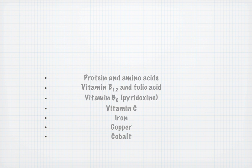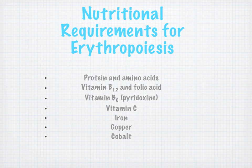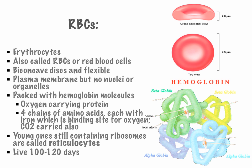On this slide, we see the necessary nutritional requirements for erythropoiesis — vitamins and other elements essential to make blood. Red blood cells have a biconcave disc shape — a cross-sectional view and a top view. You can also see hemoglobin, with the beta globins and the alpha globins.